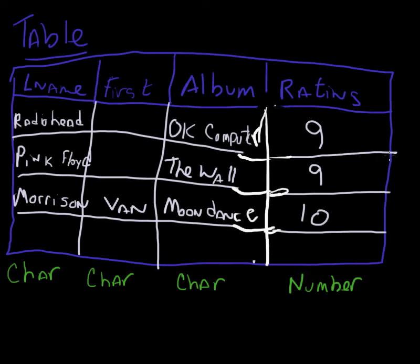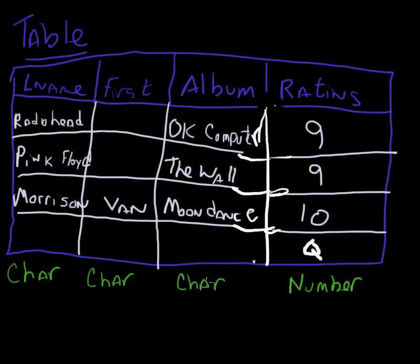So if you remember from our previous video, we created this table to store my music collection. We had these different columns: last name, first name, album, and rating. We gave them each a type — character fields and number fields. The type of the column kind of acts as a constraint also. If I try to insert a character like a Q into the rating field, it's obviously not going to let me do that because it's defined as a number field. So that's kind of our first level of constraints.